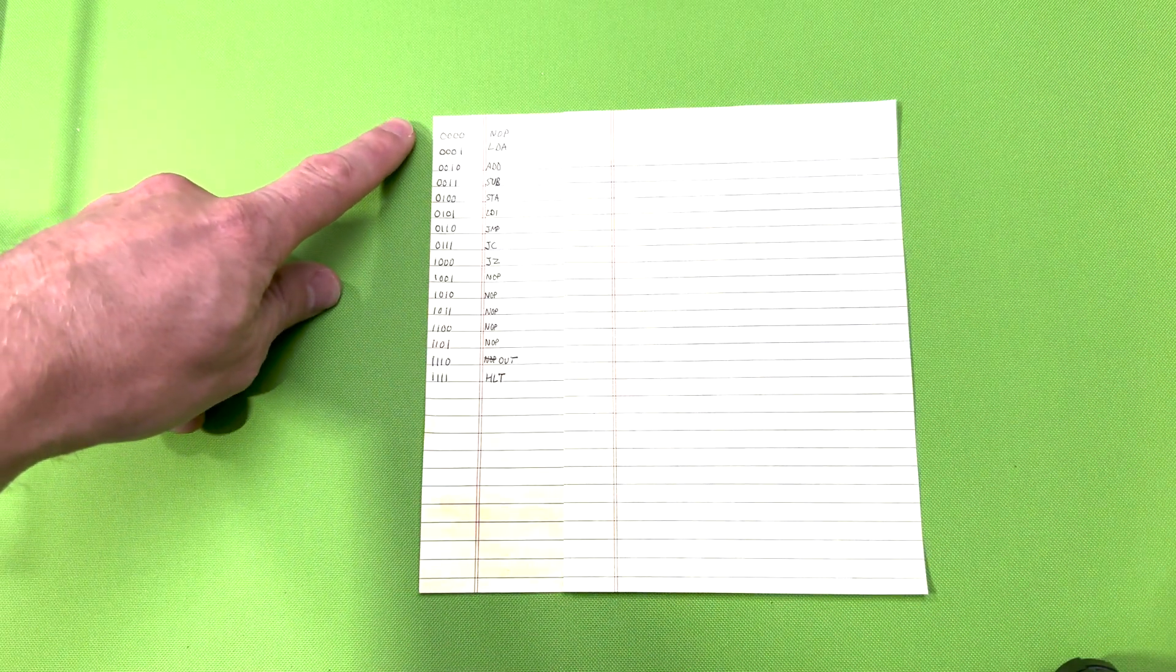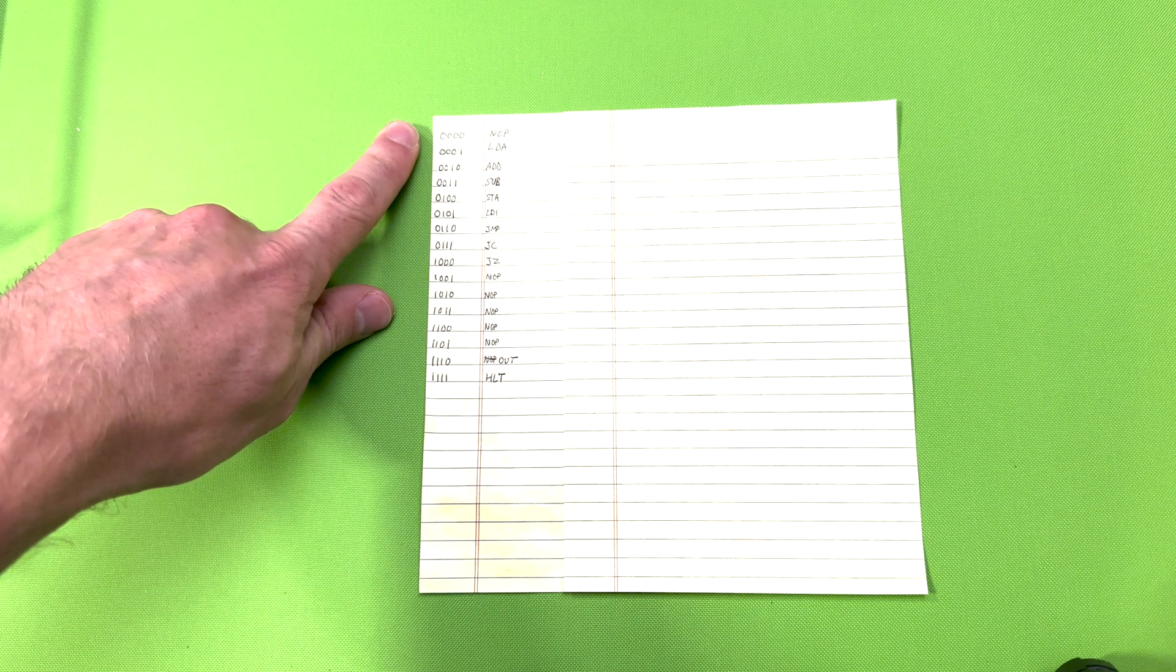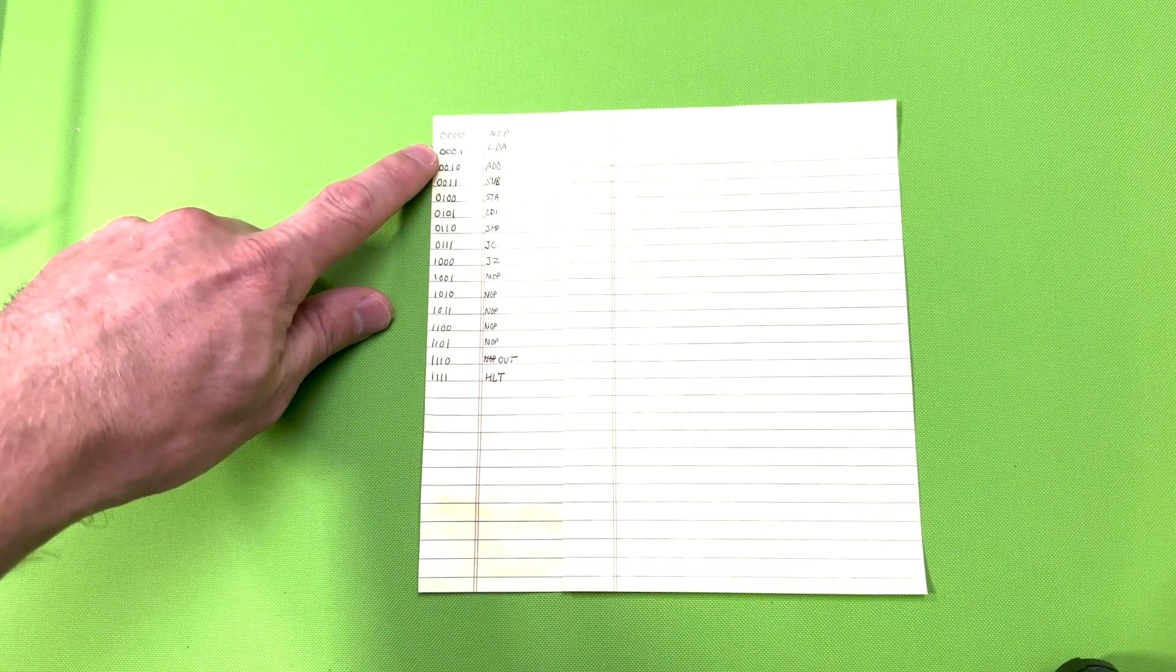Now that we have a rough idea on how the instructions are programmed, let's take a look at the instruction set that was programmed for this computer in the EEPROMs. The first instruction is a NOP, which means it does not do anything, so we'll skip over that.